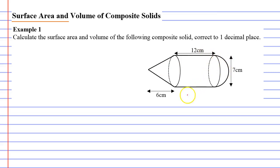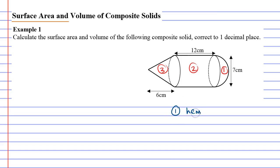The three pieces it's composed of — let's call this piece one, piece two, and piece three. Piece one is a hemisphere, and the formula for the surface area of a hemisphere is 4πr² divided by 2, since it's half of a complete sphere.